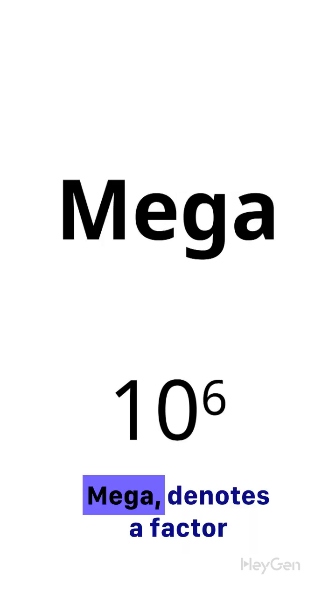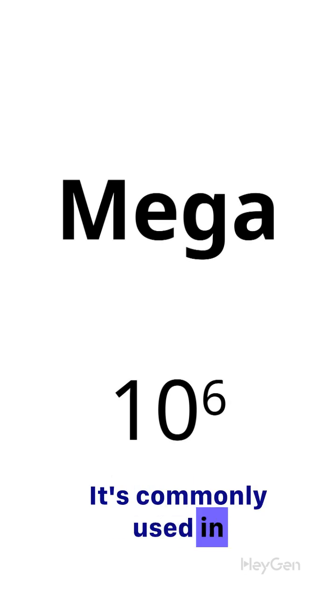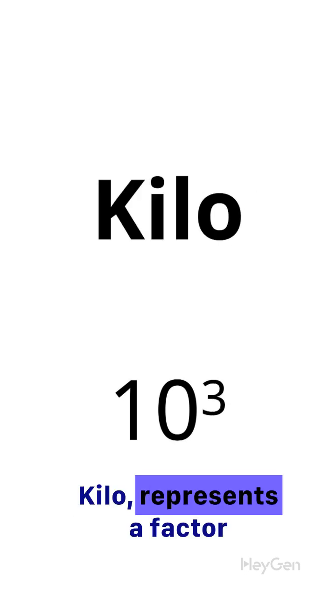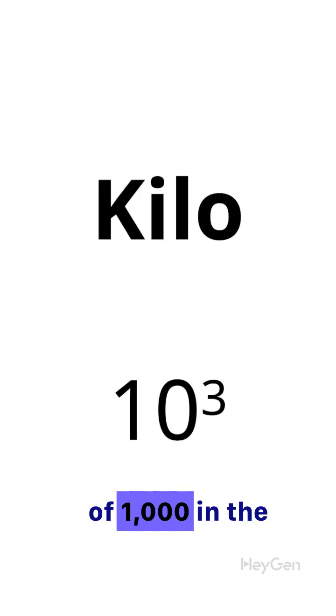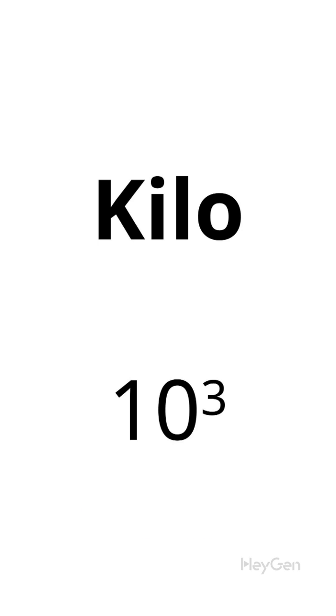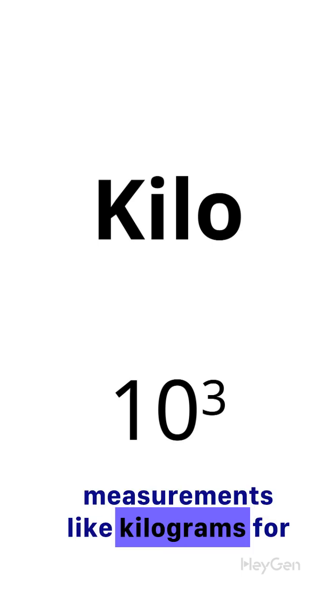Mega denotes a factor of one million. It's commonly used in fields like computing. Kilo represents a factor of 1,000 in the metric system. It's commonly used in measurements like kilograms for mass.